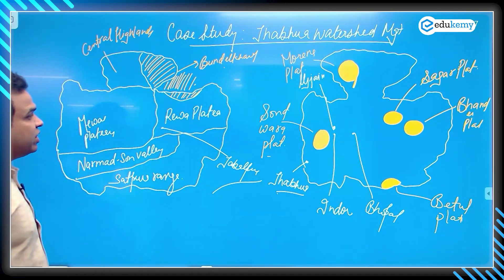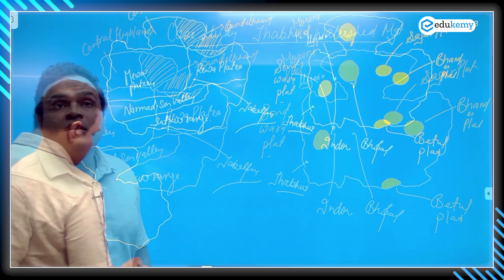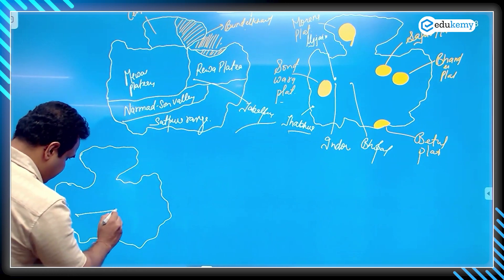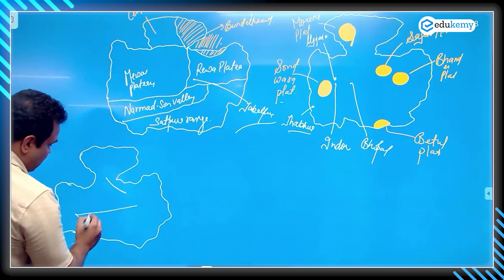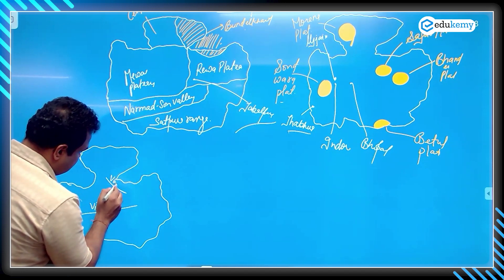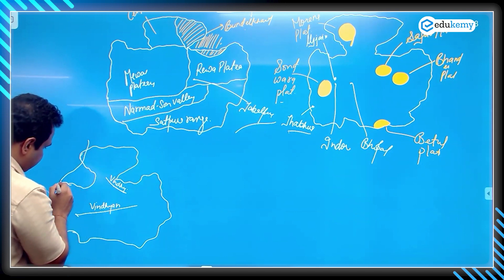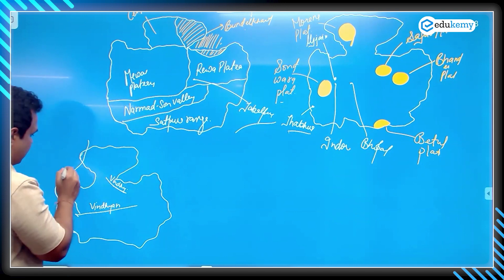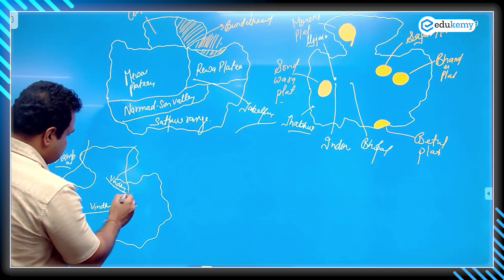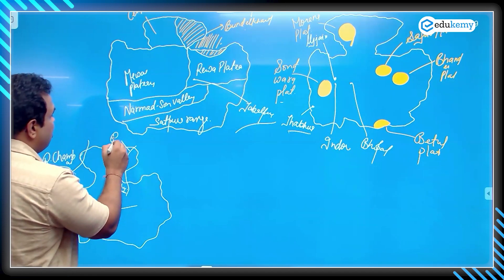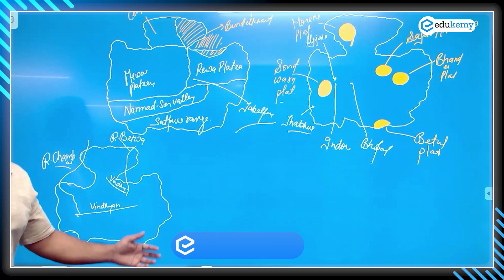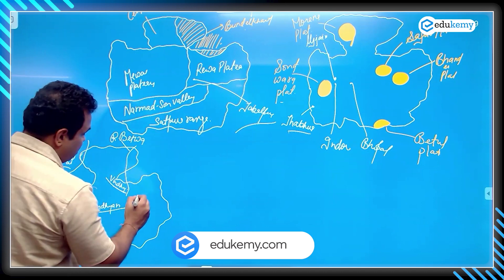Now we will see some of the rivers - Chambal and others. Here we have the Vindhyan range. Here we are seeing the Chambal river and river Betwa. All these are tributaries of the Yamuna - ultimately they are joining the Yamuna. We also have the Ken river.